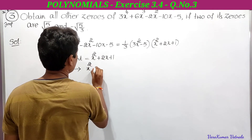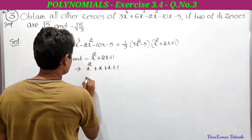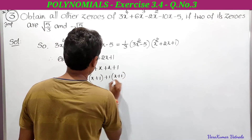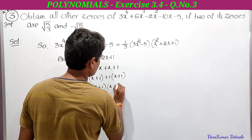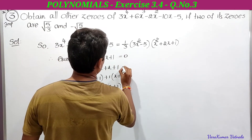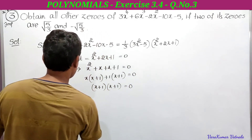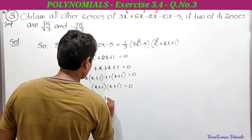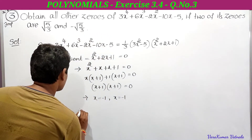Factoring x² + 2x + 1 by splitting the middle term: write 2x as x + x. Then x(x + 1) + 1(x + 1) = (x + 1)(x + 1). Setting each factor to zero: x + 1 = 0 gives x = -1, and x + 1 = 0 again gives x = -1.